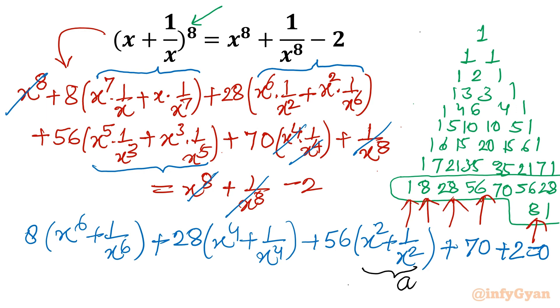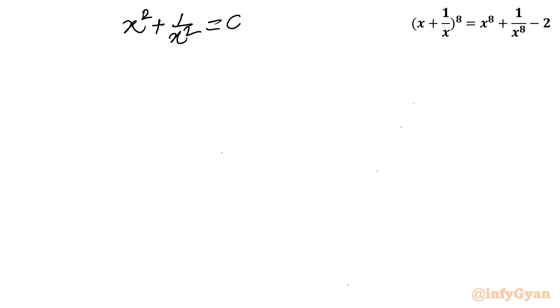Now I need to find what x^4 + 1/x^4 and x^6 + 1/x^6 are. Since x^2 + 1/x^2 = A, I will take the whole square to get the value of x^4 + 1/x^4, which equals A^2 minus 2. We will use this directly.